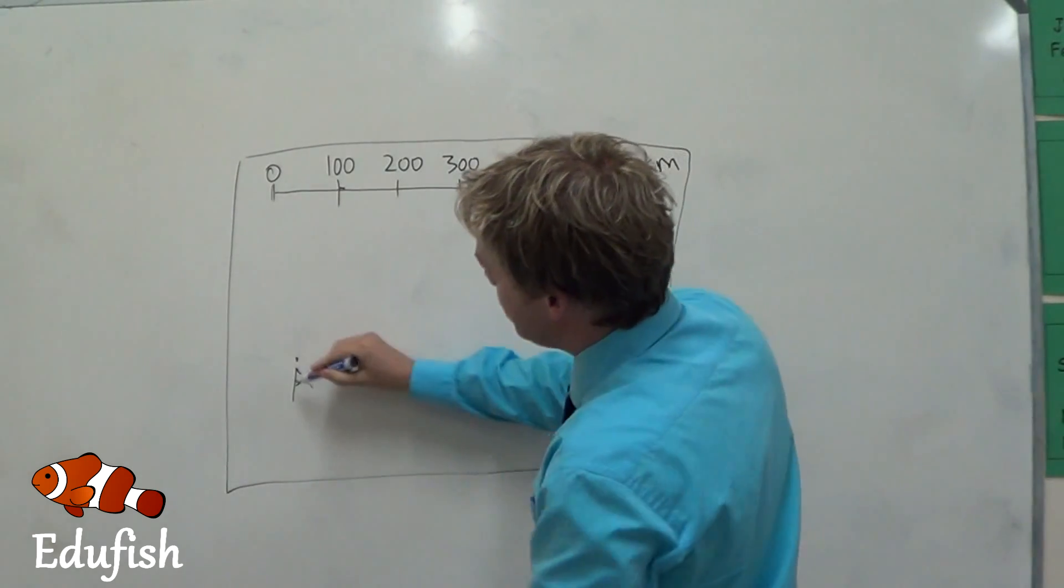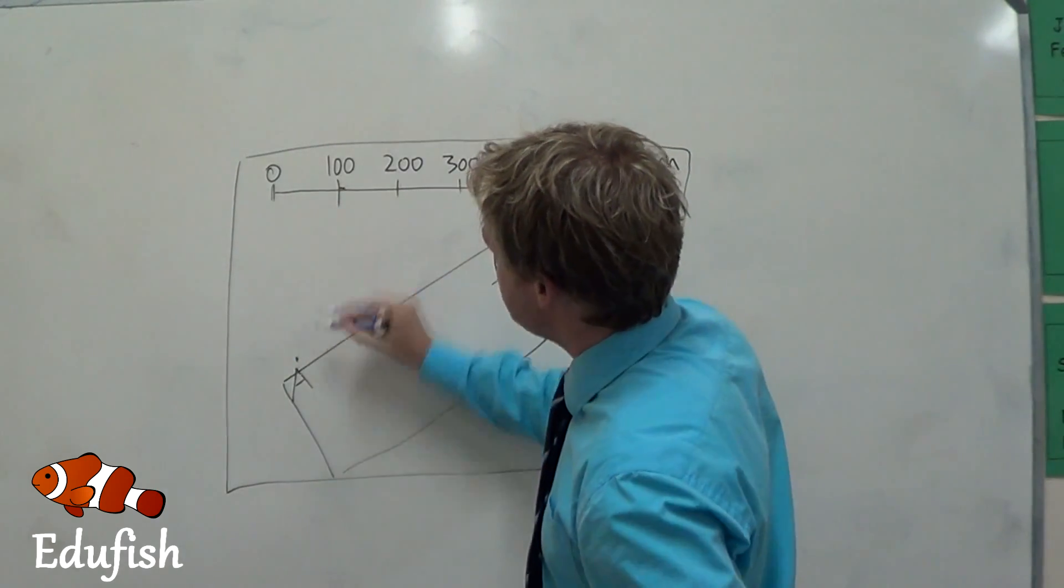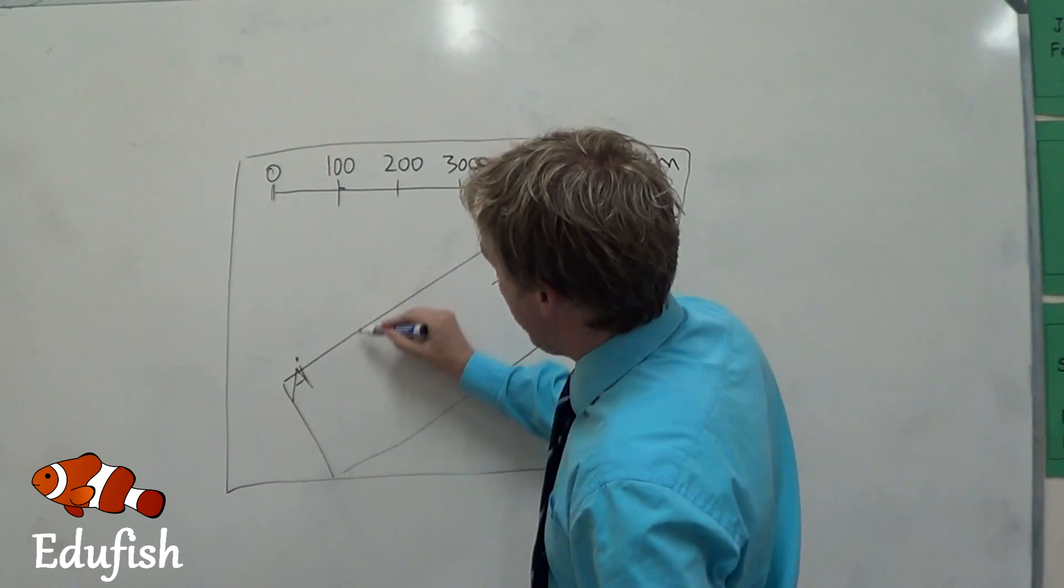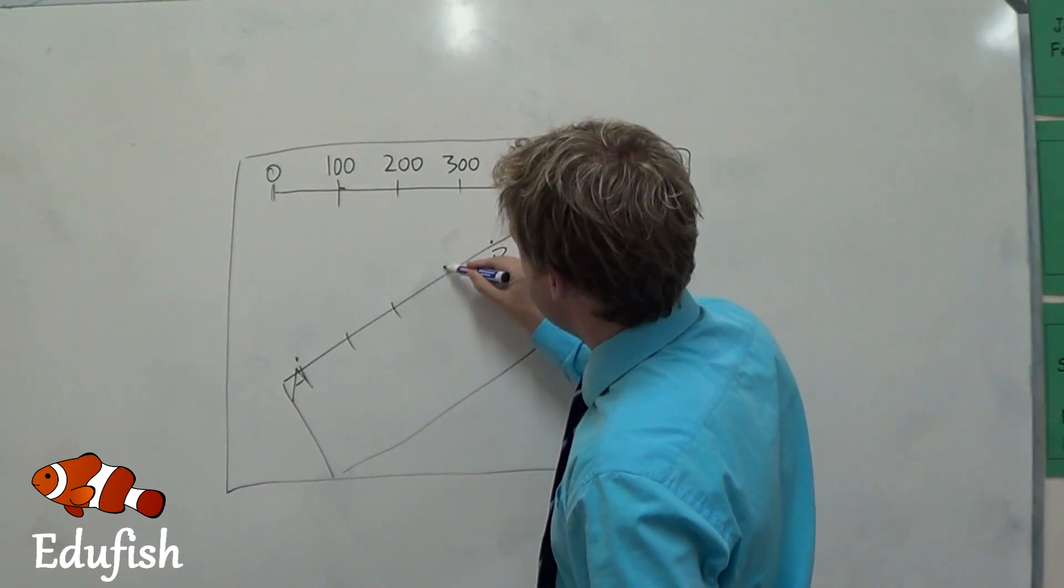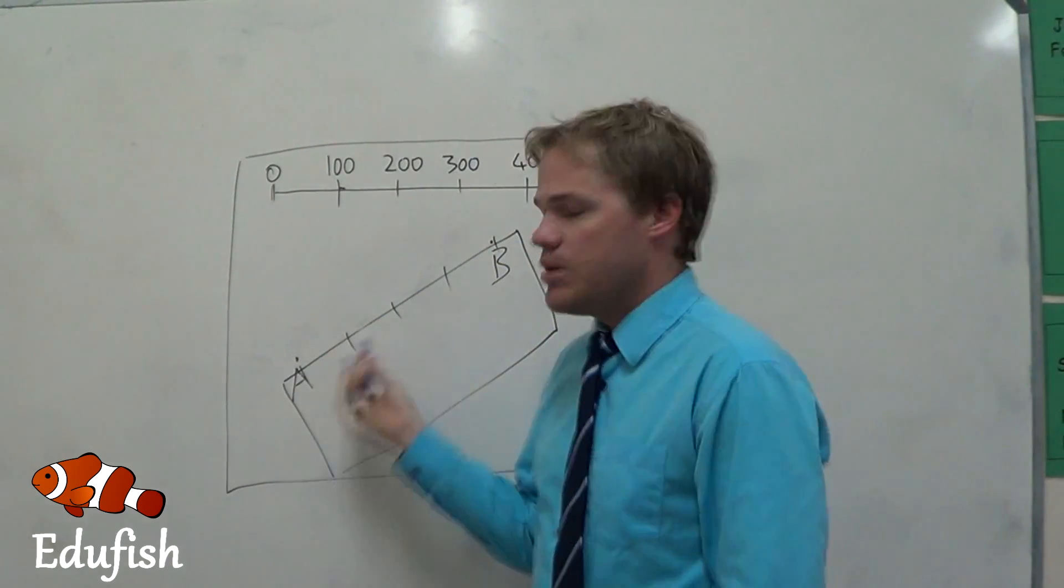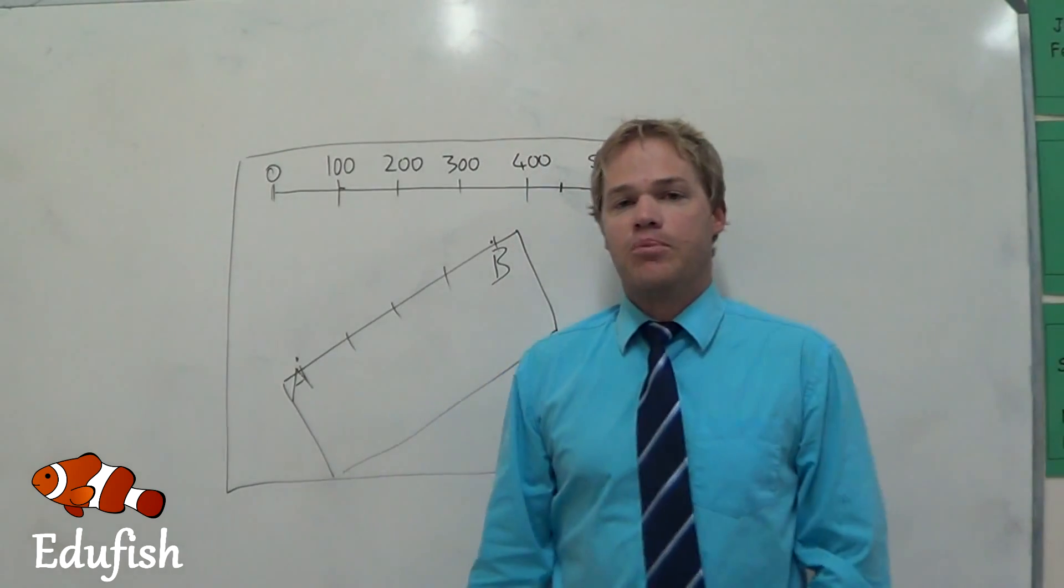You put your piece of paper, let's say this is your piece of paper, and you make your measurements as it is over there, and then you can easily measure the real distance between point A and point B.